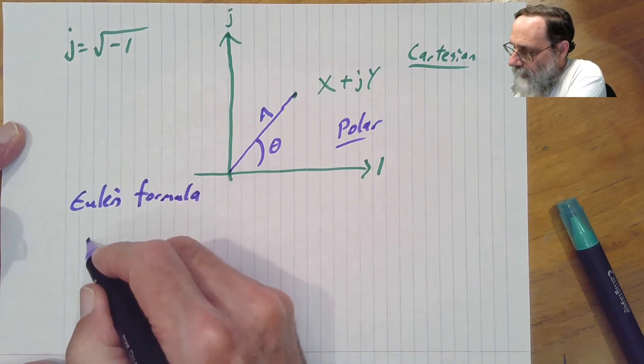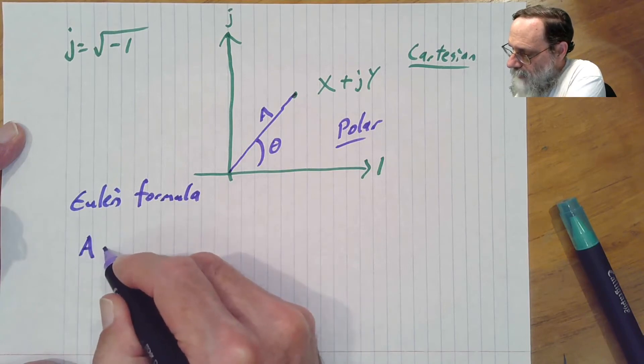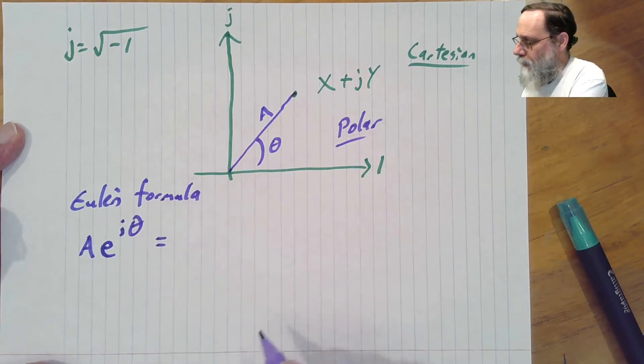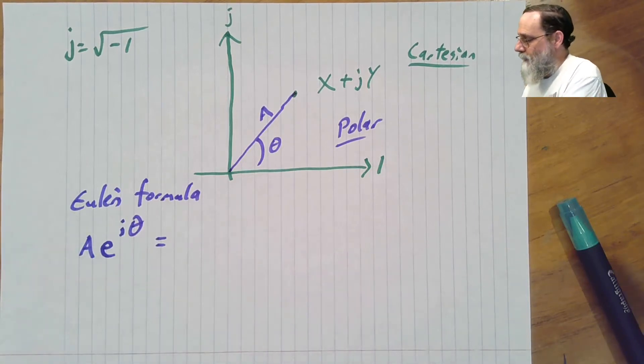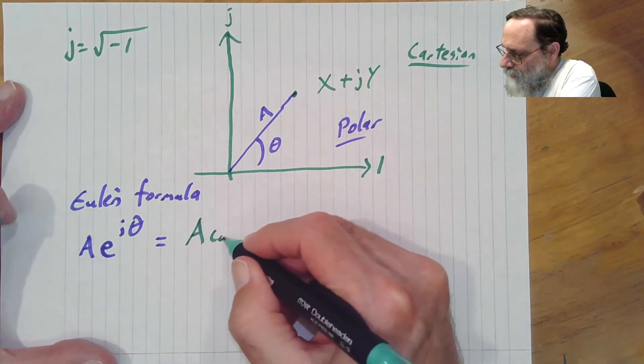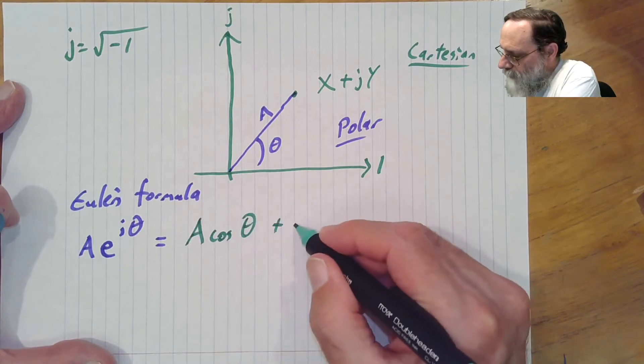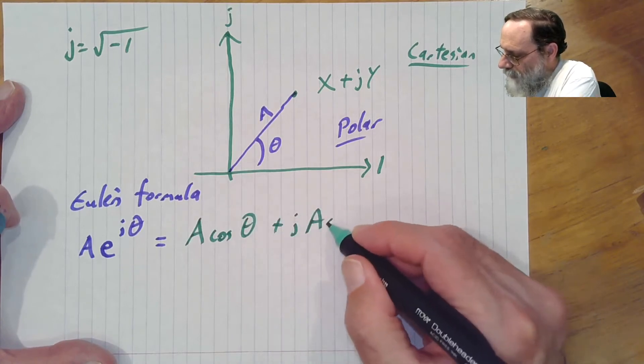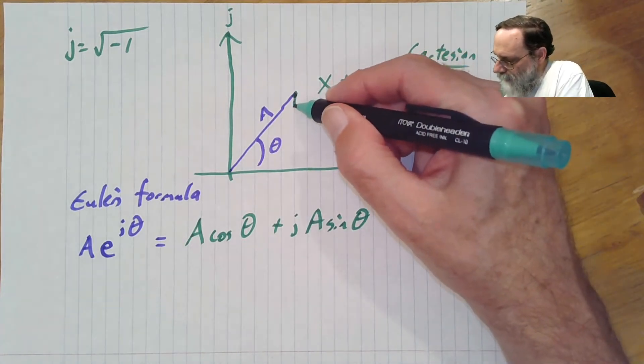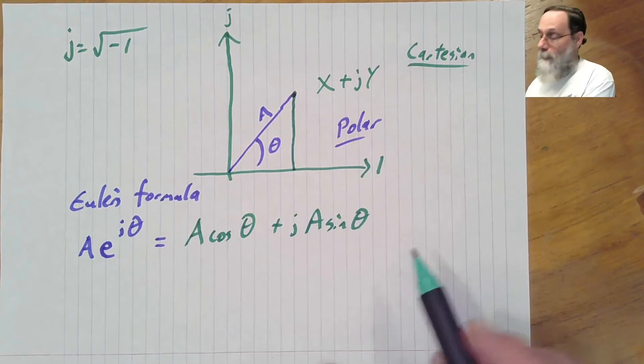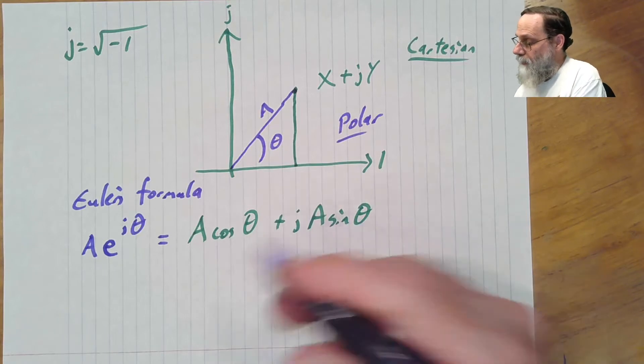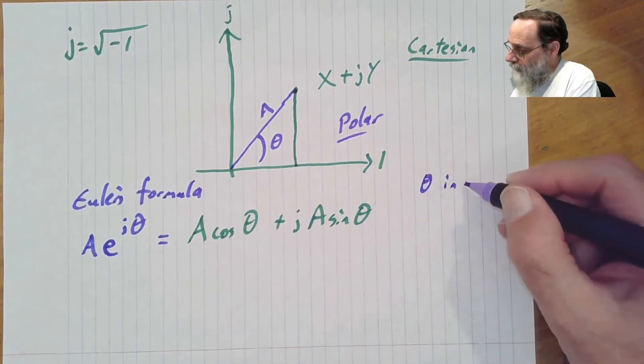And that is that if we write A times e to the j theta, that is equal to, switch over to Cartesian coordinates, A times cosine of theta, plus j times A sine theta. Basically, if we look at what x and y are here, if theta is in radians, that's an important point here, all these computations here, theta is in radians.